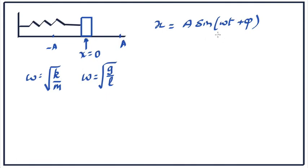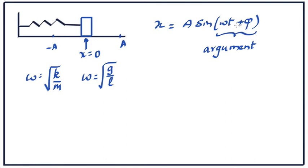If you look at this quantity in the brackets, that is called the argument of the sine function. That is what determines which part of the oscillation you are at. Note that the argument of the sine function is a function of time. Omega and phi are constants. As time t changes, the argument changes, so the value of the sine changes — hence x will change. So the block is moving; its position is a function of time.